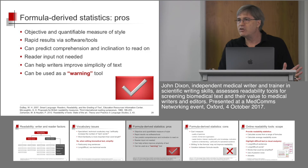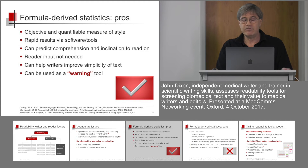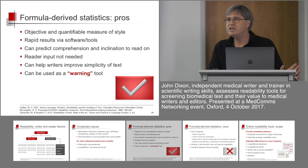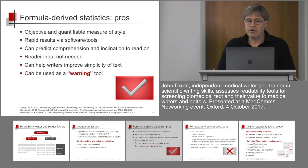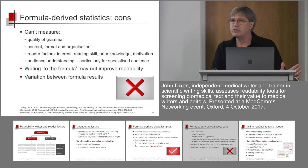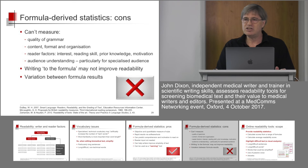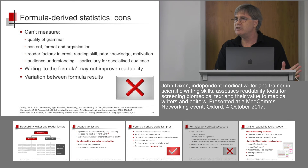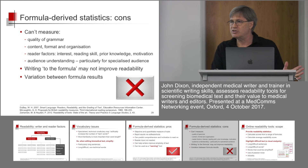So what are the advantages of using formula-derived statistics? They give an objective and quantifiable measure of style. They give rapid results. They can predict comprehension and inclination to read on without needing the reader to give you an assessment. They can help writers improve the simplicity of text and be used as a warning tool for screening text. The disadvantages: they can't measure the quality of grammar, content, format or organisation. They can't measure reader factors. They can't actually measure audience understanding — we can only predict what it's likely to be. And writing to the formula, just editing text to improve the score, may not actually improve readability.